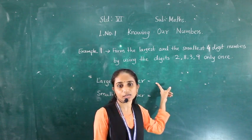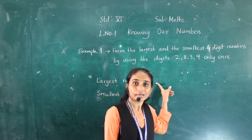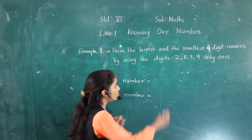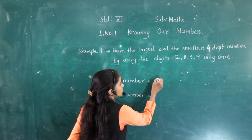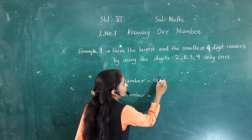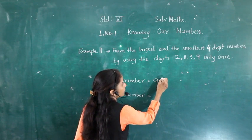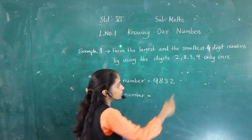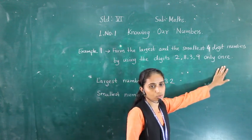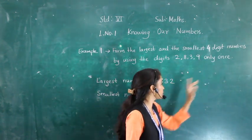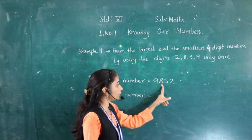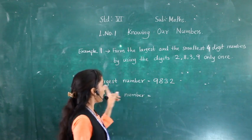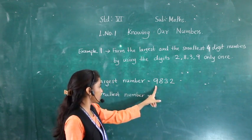While making the largest number, we have to arrange the digits in descending order. So the first digit will be 9, then 8, 3, 2. Since the condition is to use each digit only once, 9832 is the largest number.